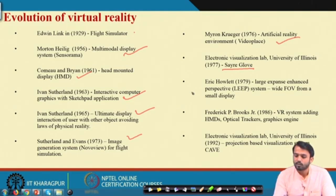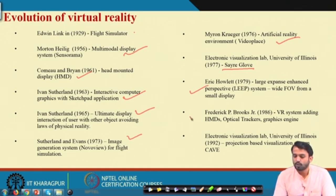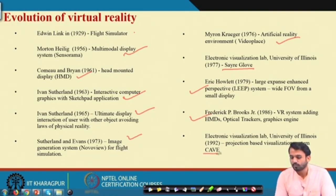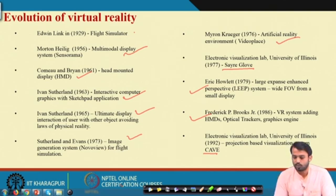Then artificial reality environment was created by Myron Krueger in 1976. The Syrac globe, an interaction device, was invented in 1977 at the Electronic Visualization Lab of the University of Illinois. Eric Howlett developed the Large Expanse Enhanced Perspective (LEEP) system, which generates a wide field of view from a small display. Then Brooks Jr. invented a VR system adding HMDs, optical trackers, and graphics engines. Finally, the CAVE system — a virtual reality visualization system — was also developed at the Electronic Visualization Lab of the University of Illinois.